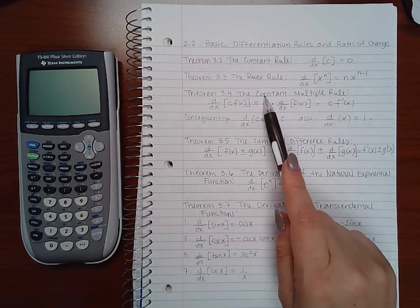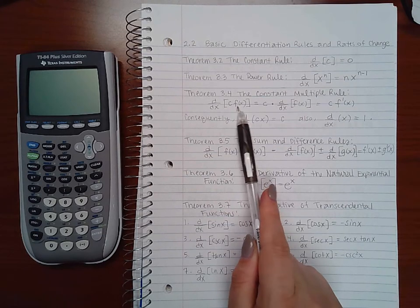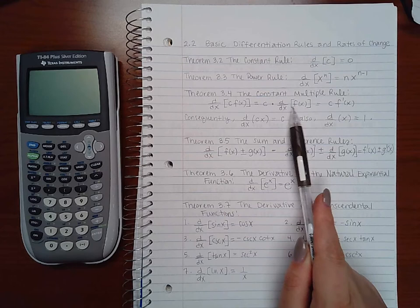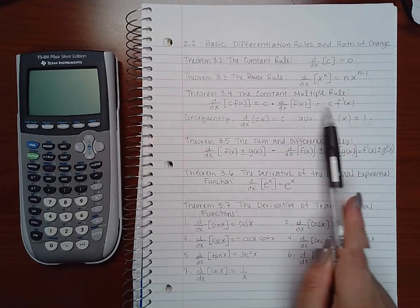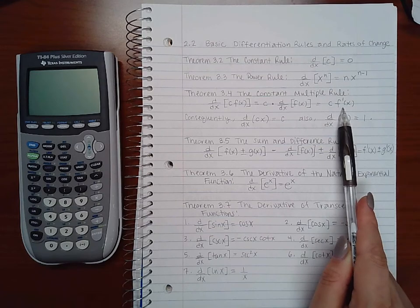Theorem 3.4 is the constant multiple rule. It says if you have a constant in front of a function, you can take the constant out and just take the derivative of the function and multiply those together. So this would be c times the derivative of that function.